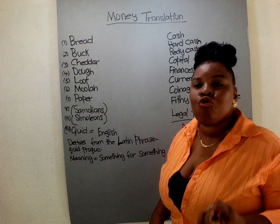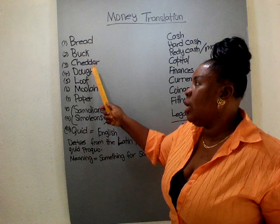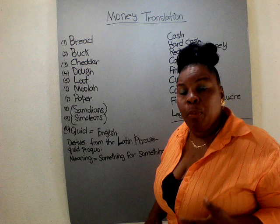Cheddar, cheese. Cheese is a nutritious substance so they consider the money to be the same. So cheddar — cheddar cheese — and money is also called cheddar. Doe is the next popular use of the word money.